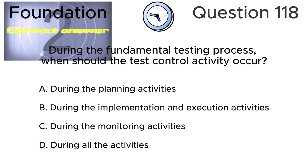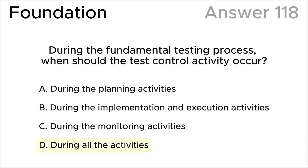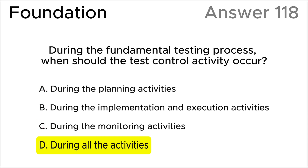The correct answer is D: During all the activities, according to the ISTQB syllabus. Control occurs throughout the project to ensure that it is staying on track based on the plan and to take any corrective steps that may be necessary. All the other answers are wrong — test control activities occur at each of the listed activities.